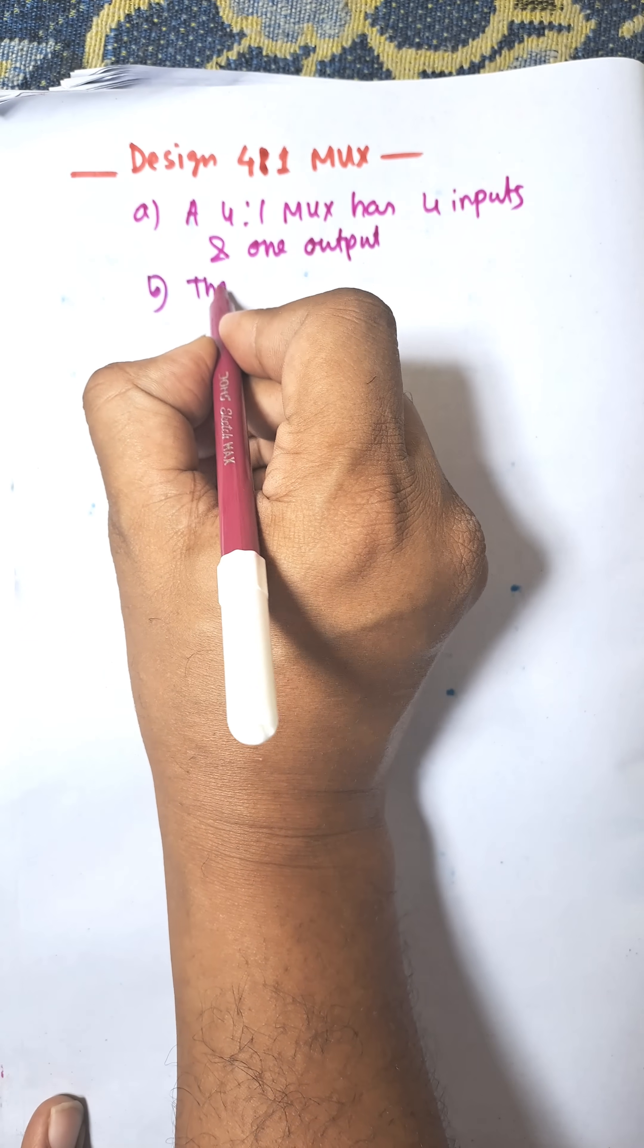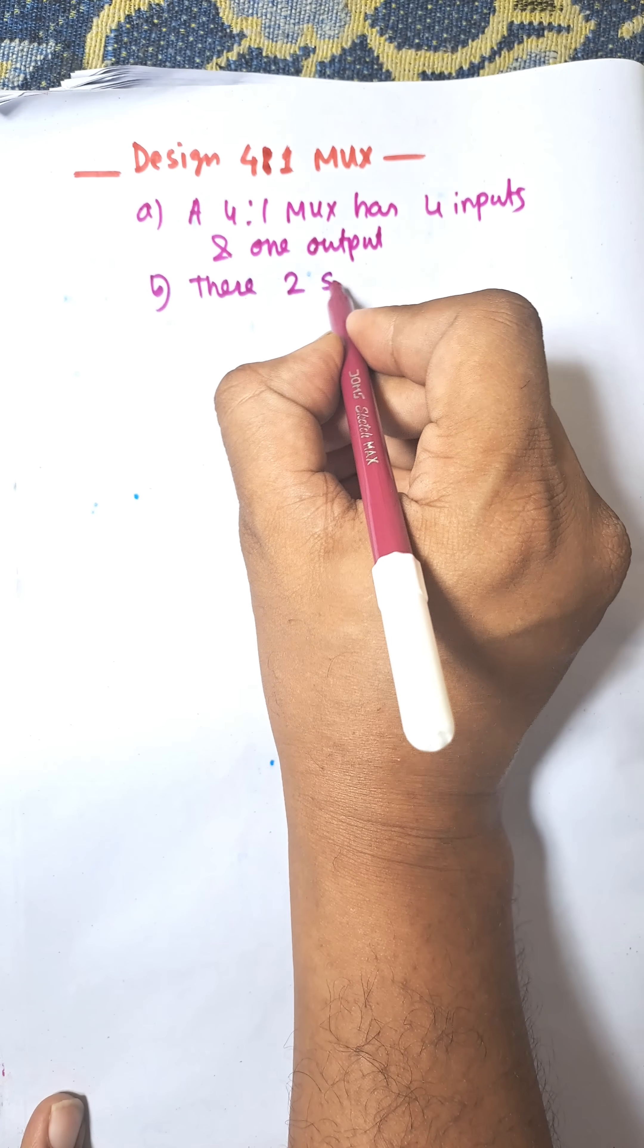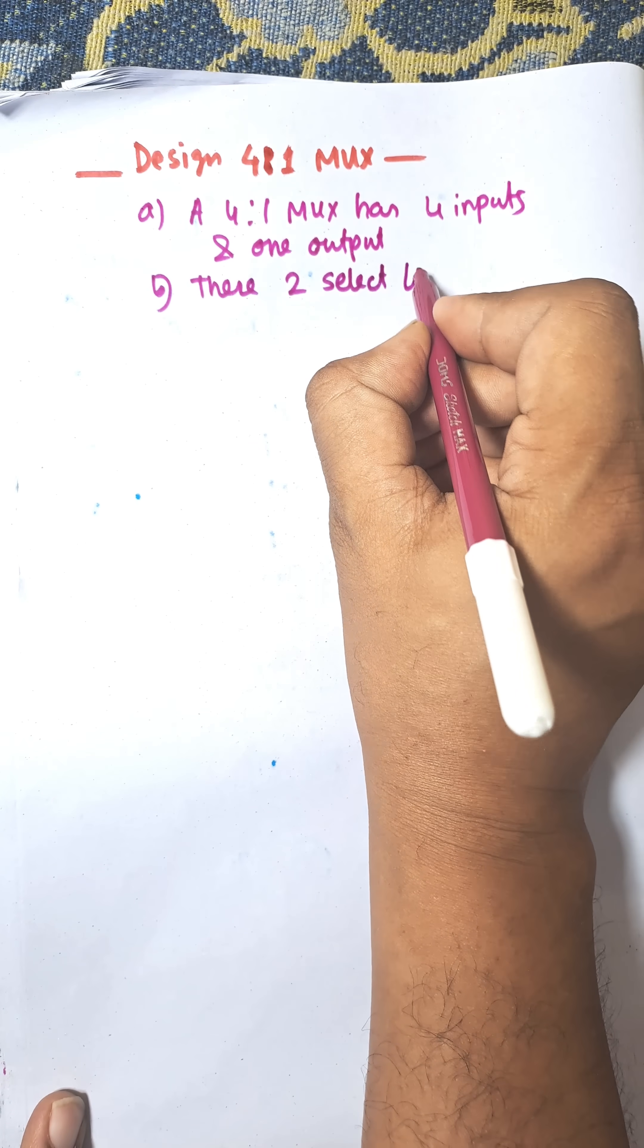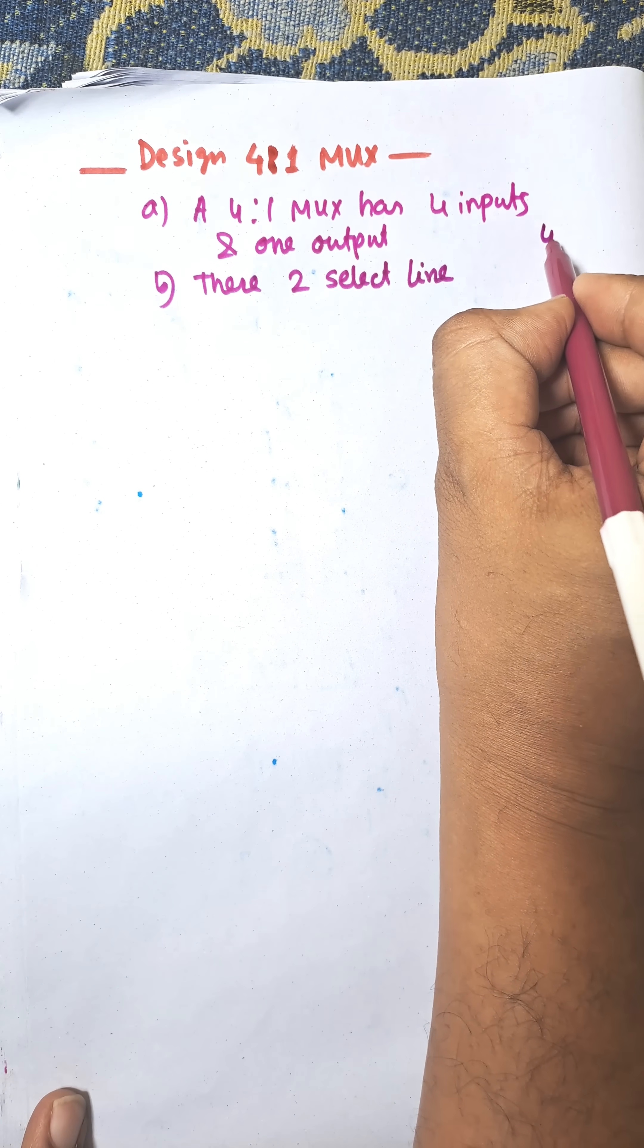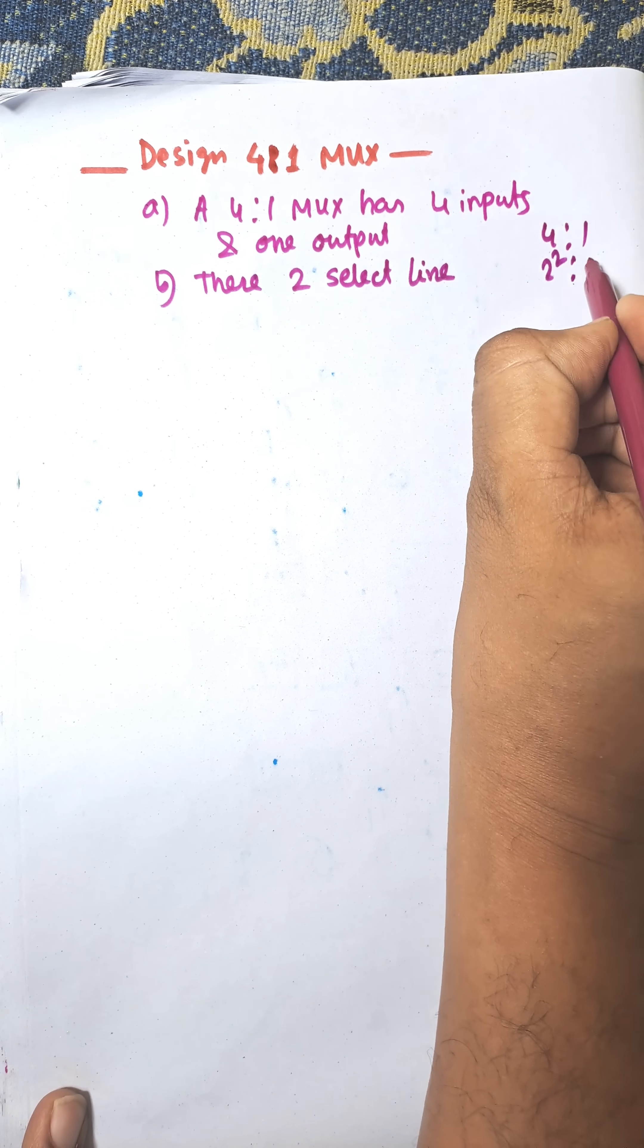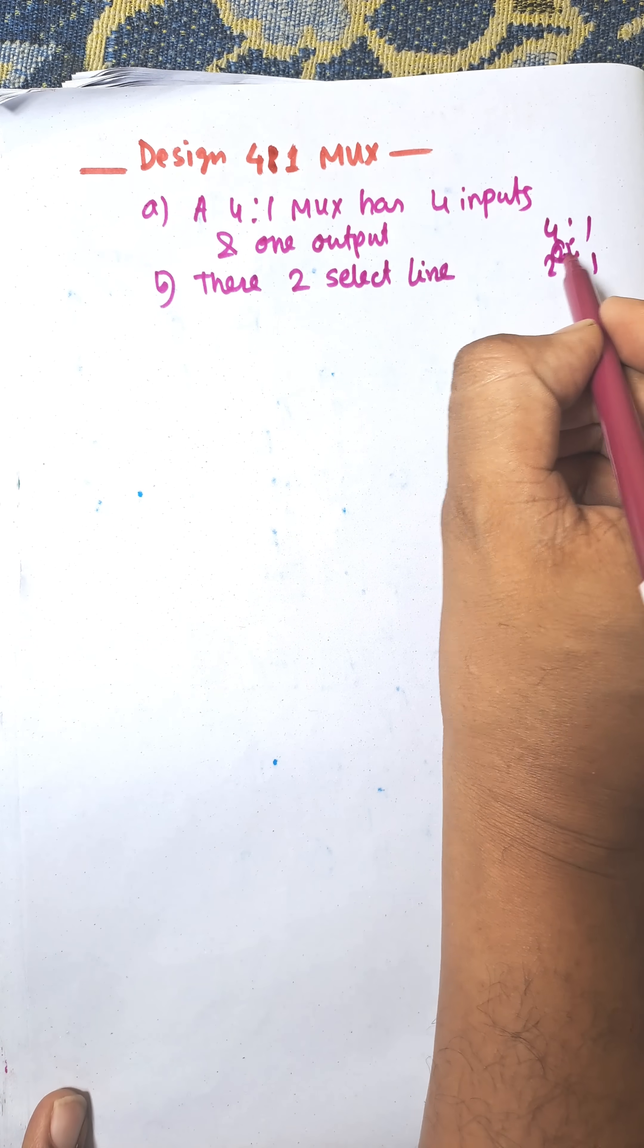There are two select lines. The select line is depending on the number of inputs. For a 4-to-1, two to the power of two equals four, so there are two select lines.